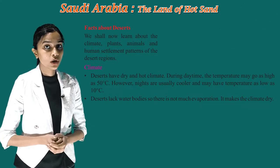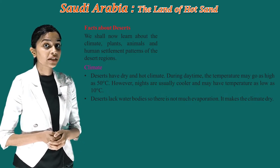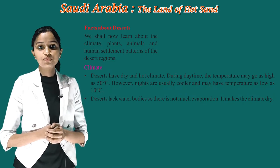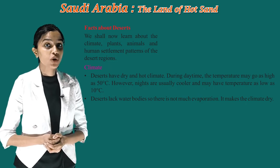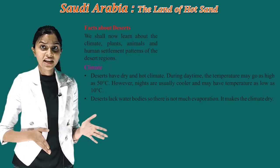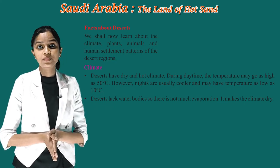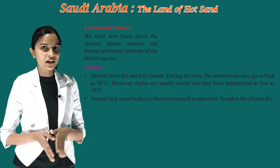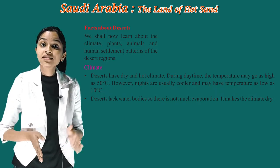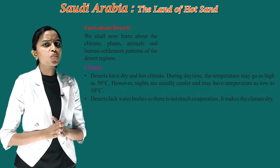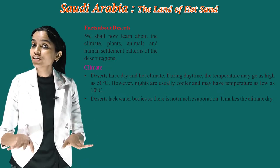We shall now learn about the climate, plants, animals, and human settlement patterns of the desert regions. Deserts have dry and hot climate. During daytime the temperature may soar as high as 50 degree Celsius. However, nights are usually cooler and may have temperature as low as 10 degree Celsius. Deserts lack water bodies so there is not much evaporation, making the climate dry.